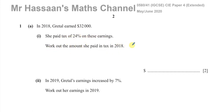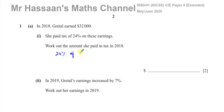She paid tax of 24% on these earnings. Work out the amount she paid in 2018. So she basically paid 24% of $32,000 — that's what the question is asking us to find: 24% of $32,000.